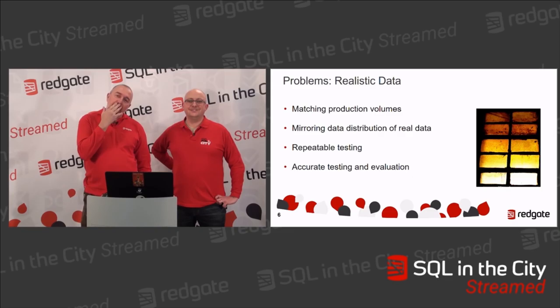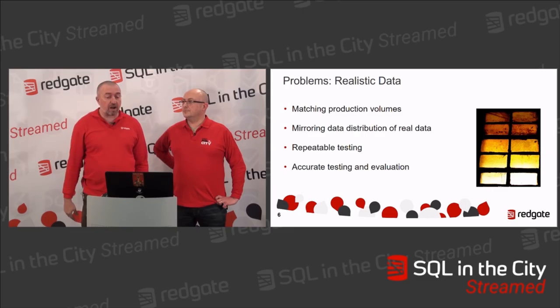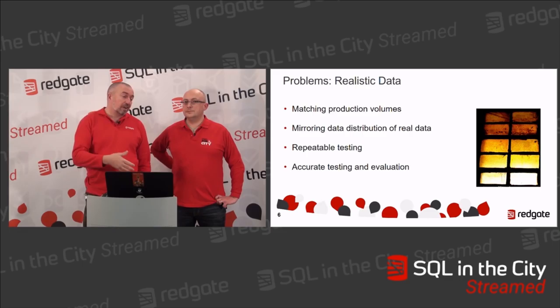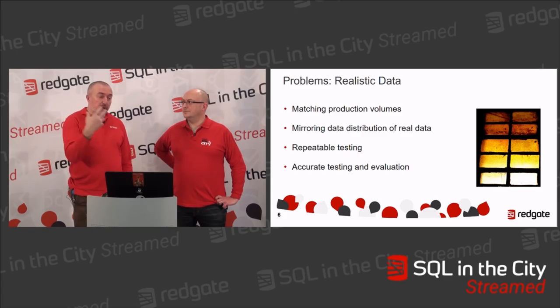The problem is we have to match the volumes of production data — that's a lot. If you get a one terabyte production system, that's a lot of stuff to move around. If you're trying to mirror the distribution of production data — say you have a million rows all saying New York — you want to be able to replicate that into your dev environment. But it's not all good on their laptops, is it?